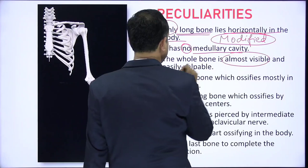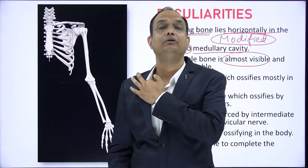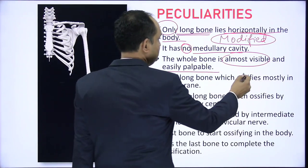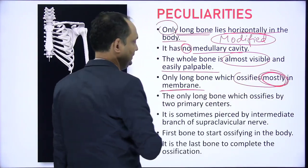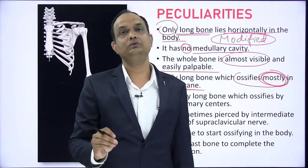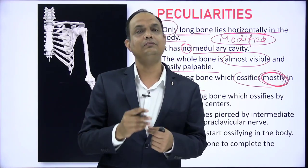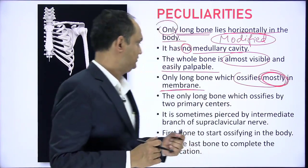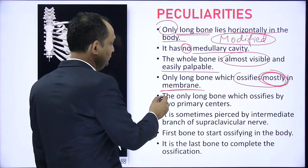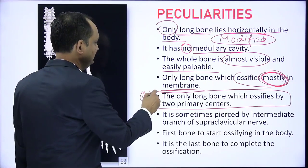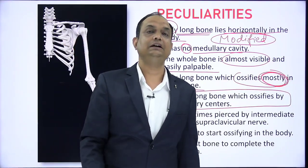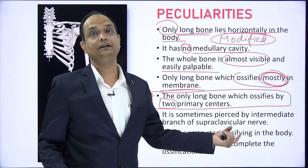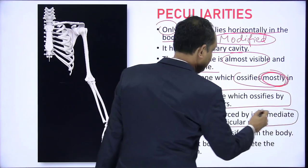The whole clavicle is almost visible and easily palpable, lying subcutaneously covered by the platysma. It is the only long bone that ossifies mostly in the membrane — long bones are generally cartilaginous in origin via endochondral ossification, but the majority of the clavicle comes from membranous ossification. It is also the only long bone that ossifies by two primary centers. These primary centers appear before birth, and it is sometimes pierced by the intermediate branch of the supraclavicular nerve, which is a cutaneous nerve.